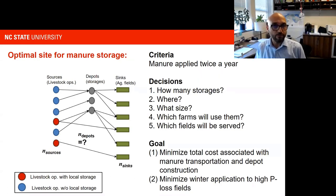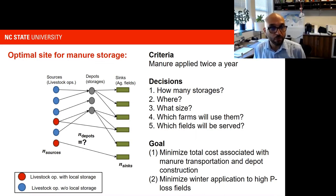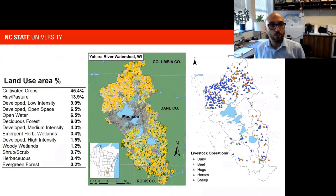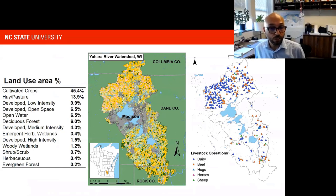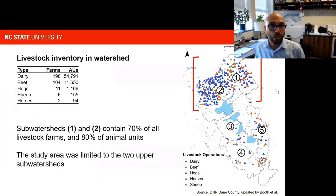To answer this question, a lot of data was needed — and that's where the inventories we developed came into play. The Yahara watershed is primarily urban in the middle, with upper and lower Yahara River areas being primarily agricultural production. The concentration of animal production happens in the upper Yahara subwatersheds, and that's where we focused our analysis. Most of the animal units and farms are located on those two subwatersheds.